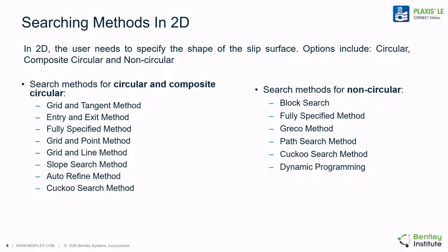Plaxis LE has implemented a comprehensive amount of searching methods in the 2D version of the software. These methods are loosely categorized as circular, composite, or non-circular methods. Searching methods for circular and composite circular include classic methods such as grid and tangent or the entry and exit method, as well as more advanced semi-automated methods such as the slope search method, the autorefine method, and the cuckoo search method. Fully specified slip surfaces are available in both circular and non-circular implementations. Search methods for non-circular search include the block search methodology, Greco's method of moving hinge points, the path search, the cuckoo search method, and the dynamic programming method for searching through a stress field for the minimum factor of safety.